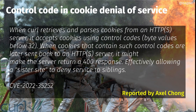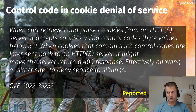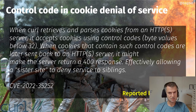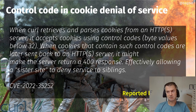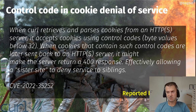The security problem for this release was reported by Axel Chong. We call it CVE-2022-35252: control code cookie denial of service. When curl receives a cookie from a server and is instructed to receive cookies, it would receive and replay them on subsequent matching requests. But the curl cookie receiver was very liberal — it received whatever the server sent, including cookies that contained control bytes, byte codes below 32 ASCII. When curl would send those cookies back to a server, it would include those control codes.